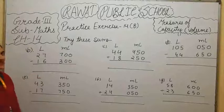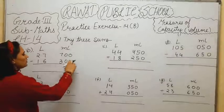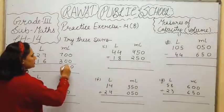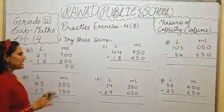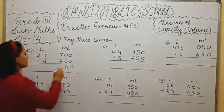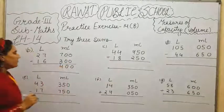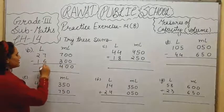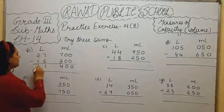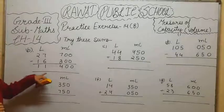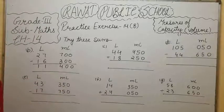It is the question of subtraction. 0 minus 0 becomes 0. When we subtract 3 out of 7, it lefts 4. 4 plus 3, 7. 7 minus 6, 1 is left. 2 minus 1, 1 is left. So, 11 liters and 400 ml.